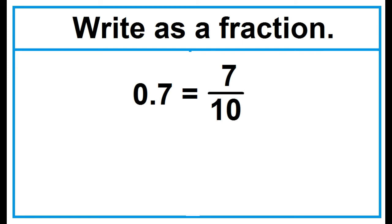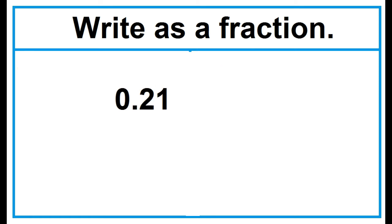Next example: write as a fraction, 0.21. The place value of 1 is hundredths, so 0.21 can be read as 21 hundredths. Write 21 as the numerator and 100 as the denominator: 21 over 100.